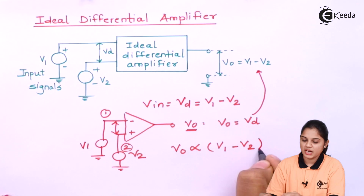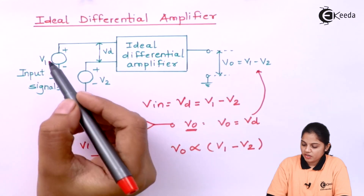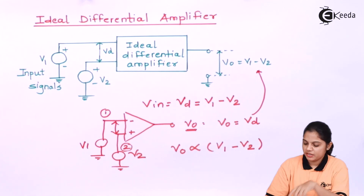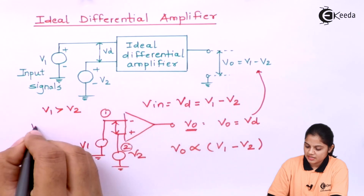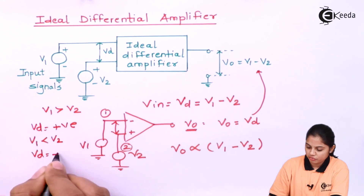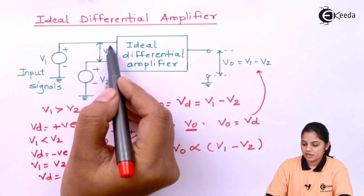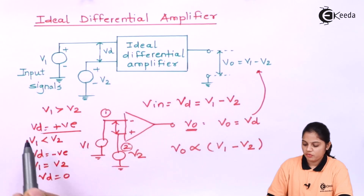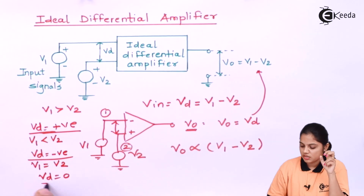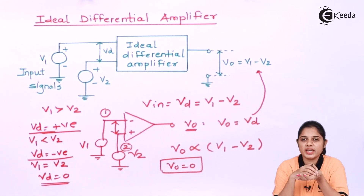The output voltage of an ideal differential amplifier is directly proportional to the difference between the two inputs V1 and V2. If V1 is greater than V2, Vd will be positive. If V1 is less than V2, Vd will be negative. If V1 equals V2, Vd will be zero — meaning there will be no output; V0 will be zero.